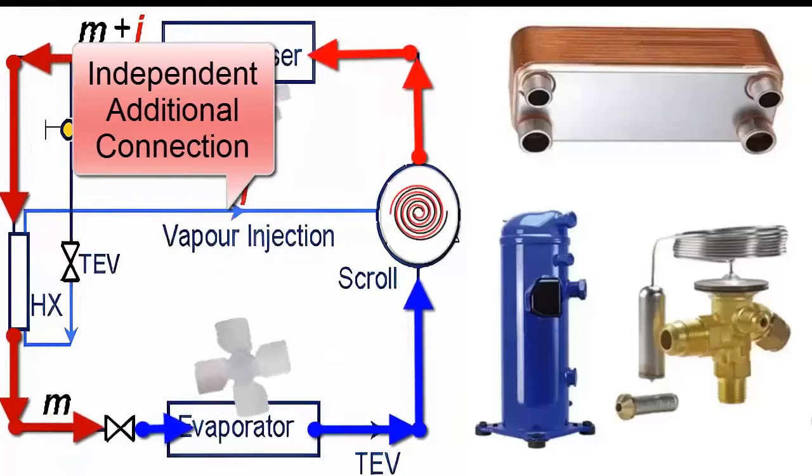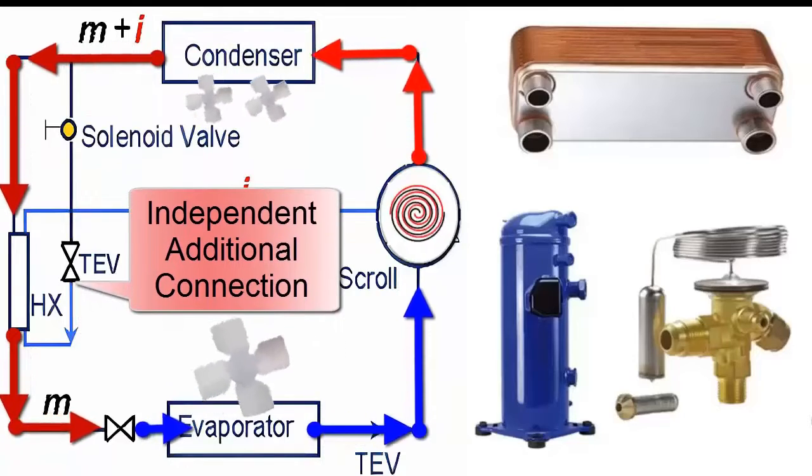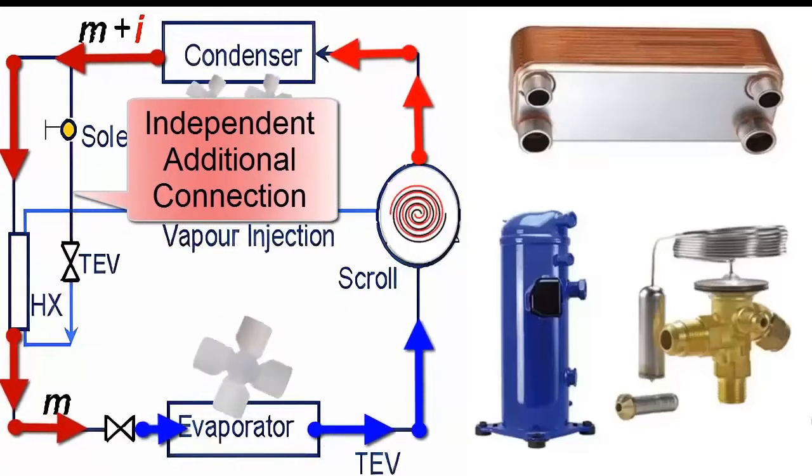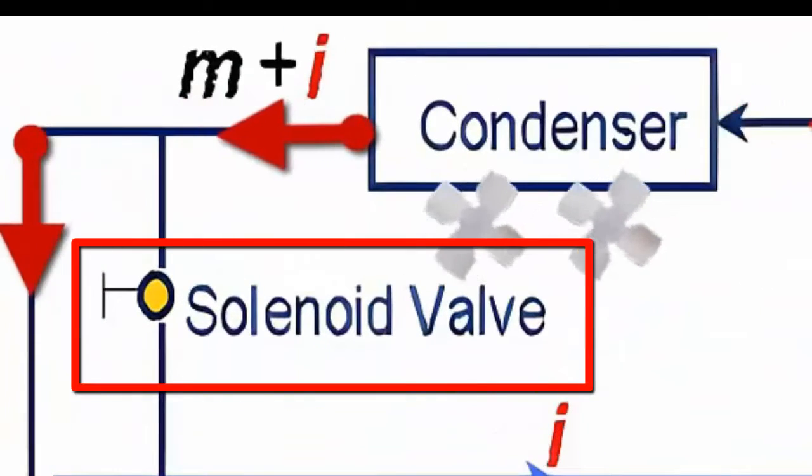In this independent connection, a solenoid valve is used to allow or block the passage of refrigerant from the condenser outlet, controlling the flow rate.